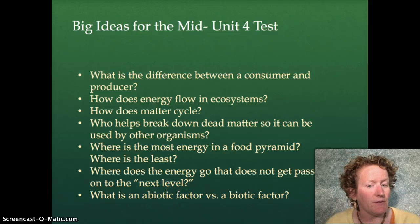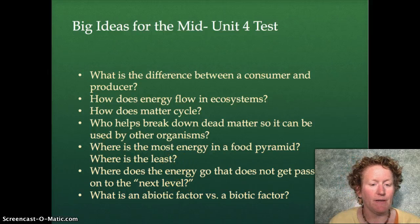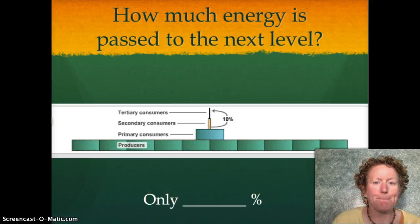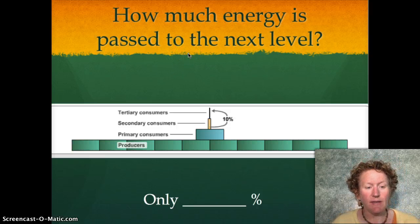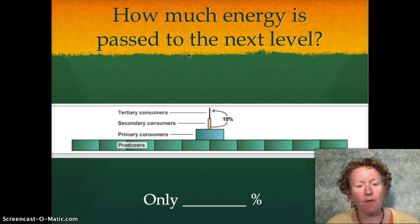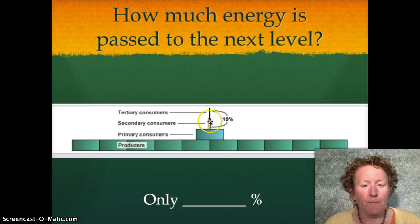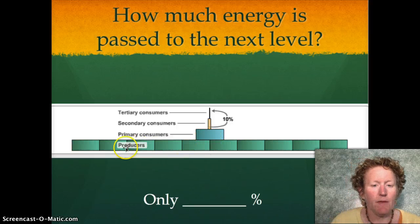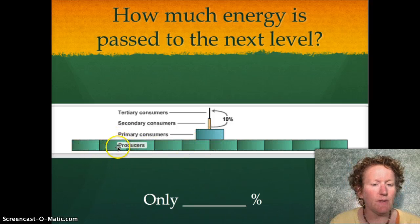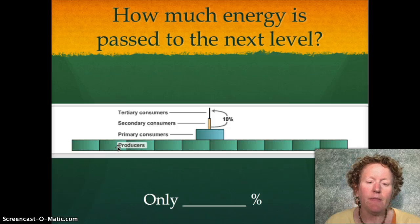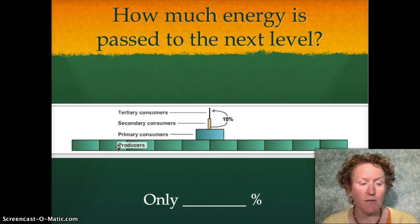I'll try to answer these questions as we go through the rest of this presentation. How much energy is passed on to the next level when you have trophic levels? Here is a food pyramid. You have the producers on the bottom — they store energy from the sun. In most ecosystems, they're plants.